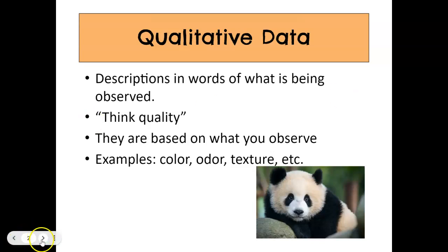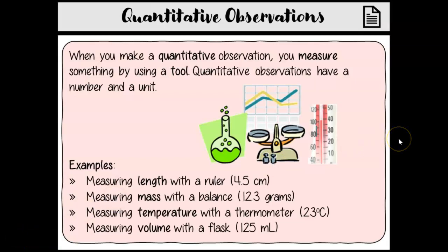Next we have quantitative observations. So quantitative, think of quantity. So these are going to be a measurement that you make or have and these are going to deal with numbers. So think of quantity, count, quantitative data. So examples of this would be measuring length with a ruler, mass with the balance, temperature with a thermometer, or measuring volume with a flask. So we do just need to know the difference between qualitative and quantitative data.